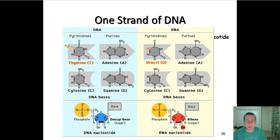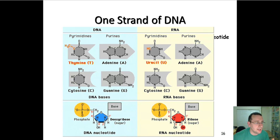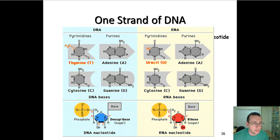There are two types of nitrogenous bases: purines and pyrimidines. The five bases that show up in nucleic acids are thymine, adenine, cytosine, guanine, and uracil.